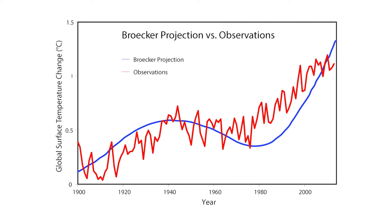His estimate was about 0.3 degrees Celsius too high, but that's pretty close for a simple climate model that he was using 40 years ago.